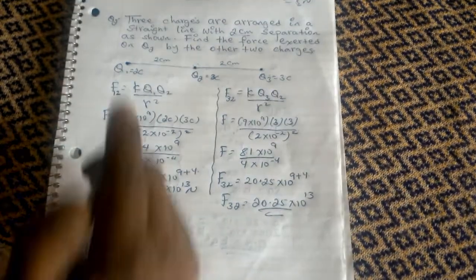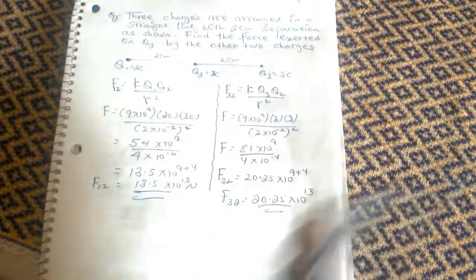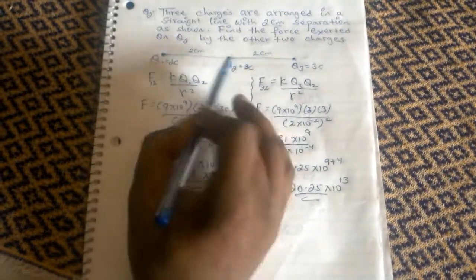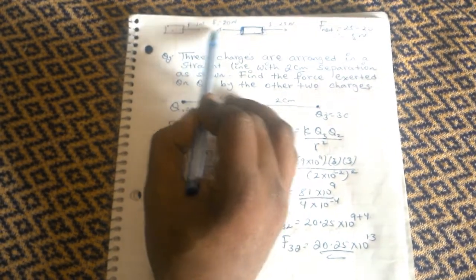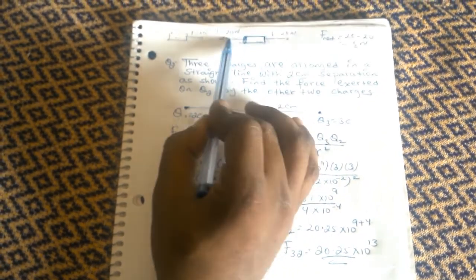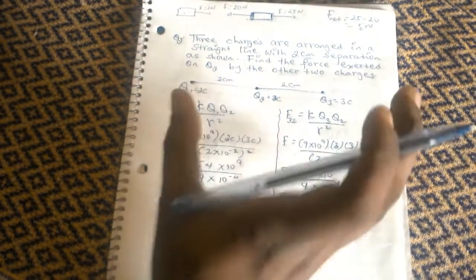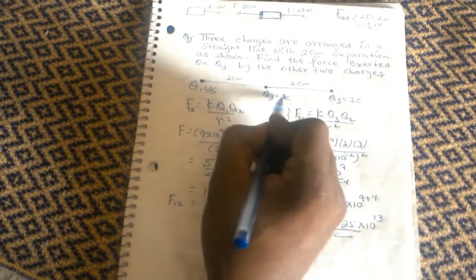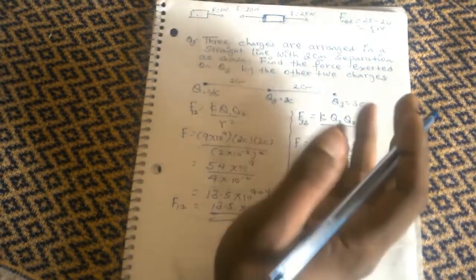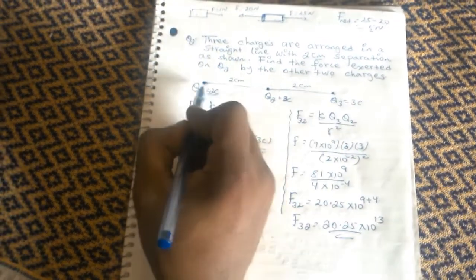Now we have F1 and F3. The net force on Q2 from Q1 and from Q3 — we are going to determine the net force, considering the direction of each force based on whether charges attract or repel.